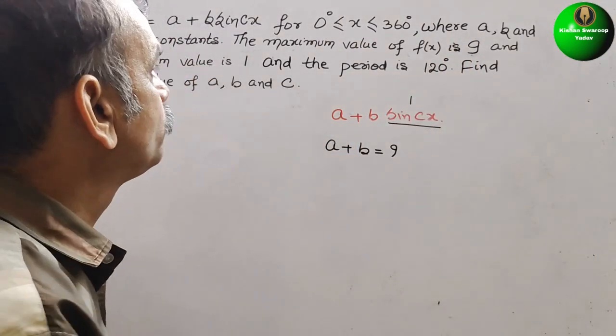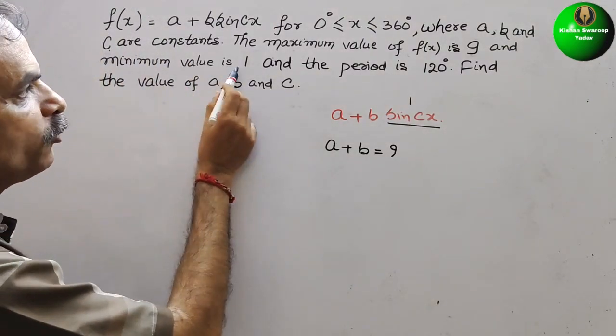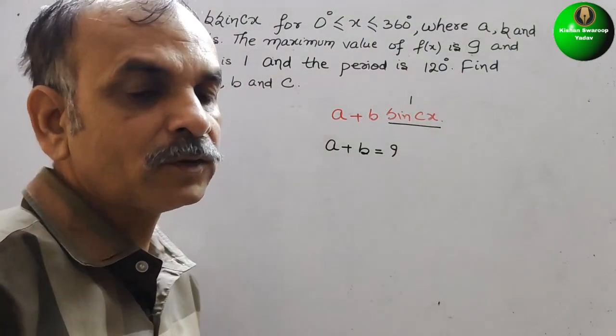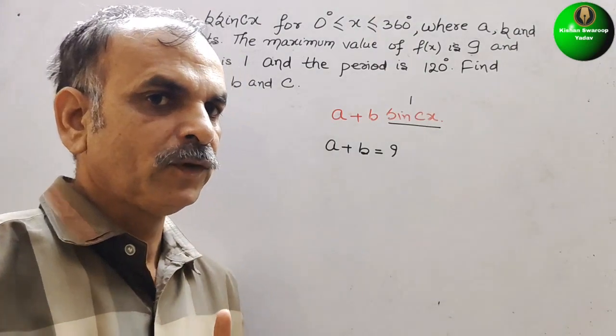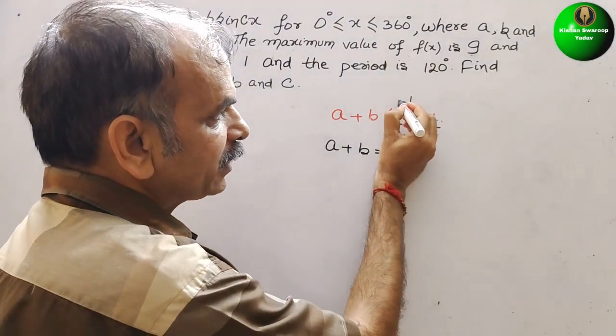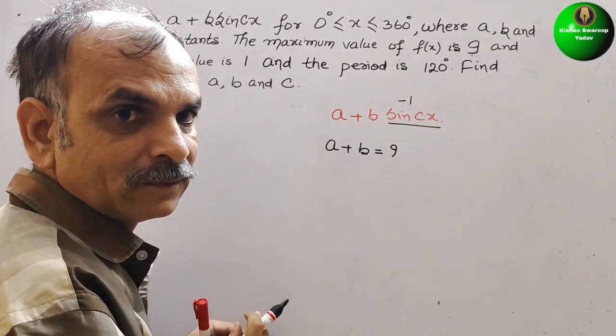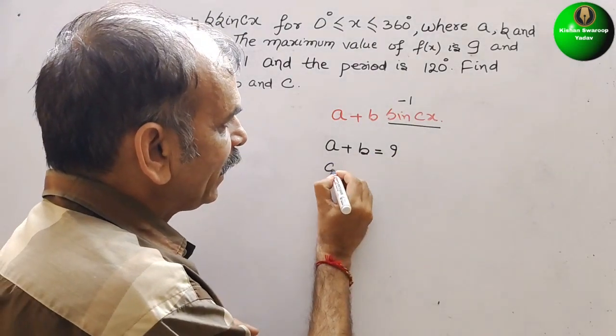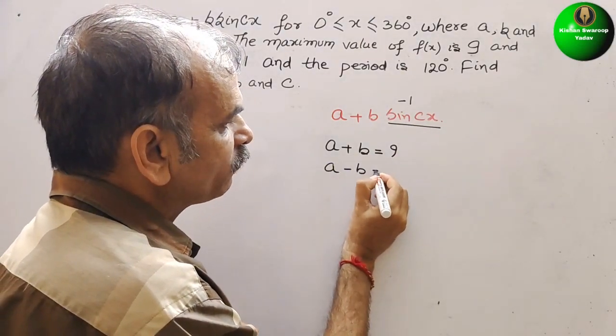And minimum value is minus 1. Minimum value is 1, sorry. So minimum value that means it is minus 1. So what we will get? a minus b is equal to 1.